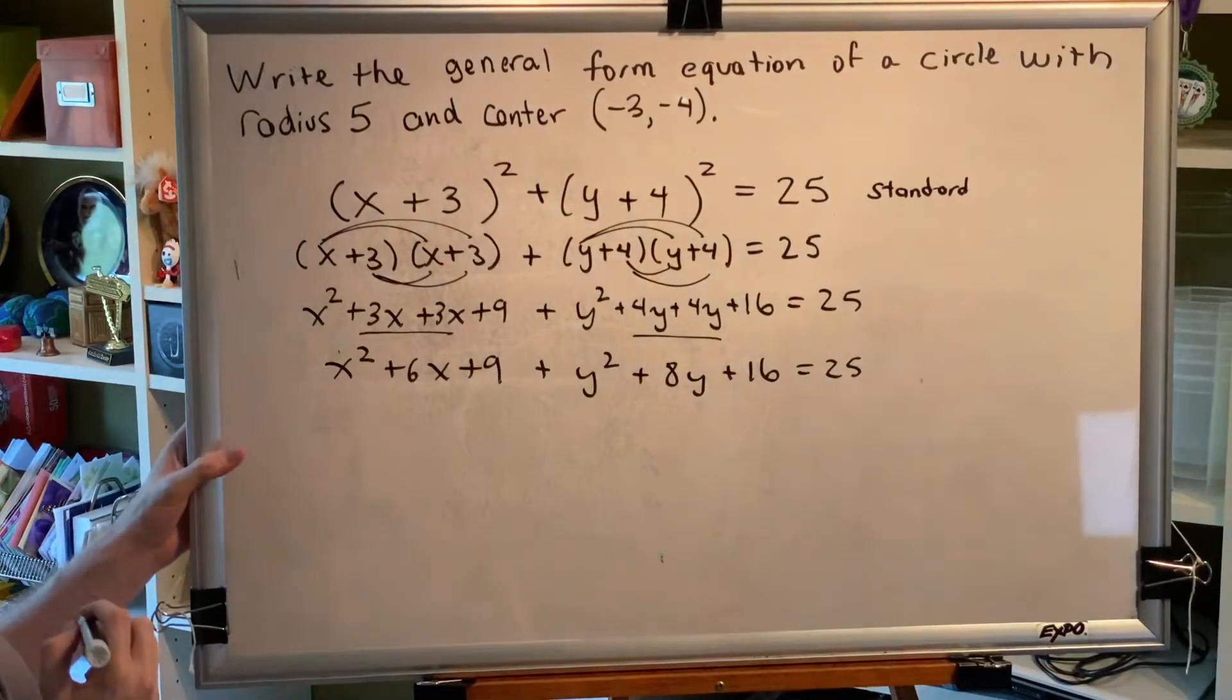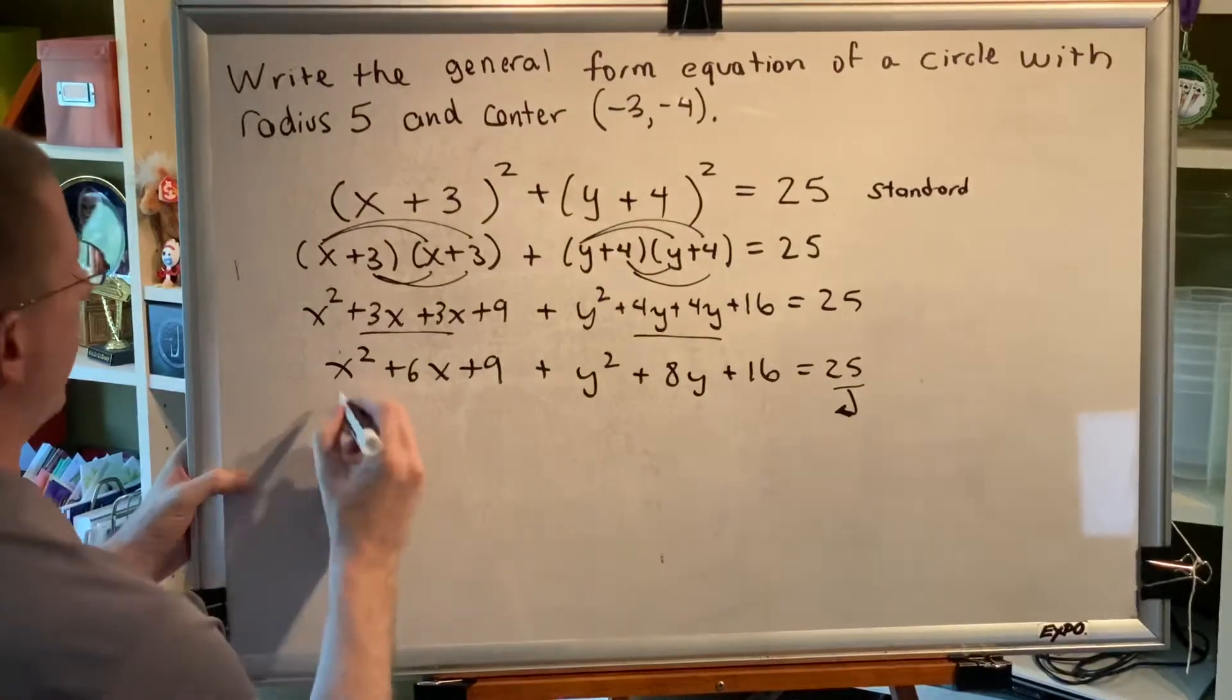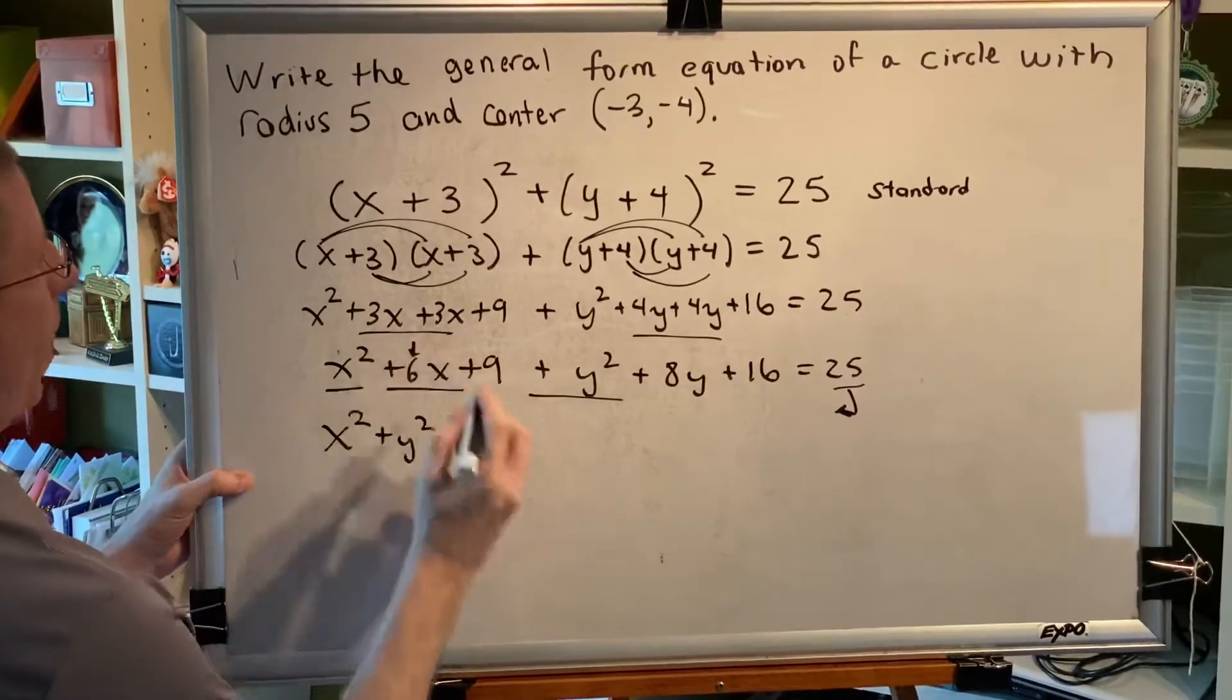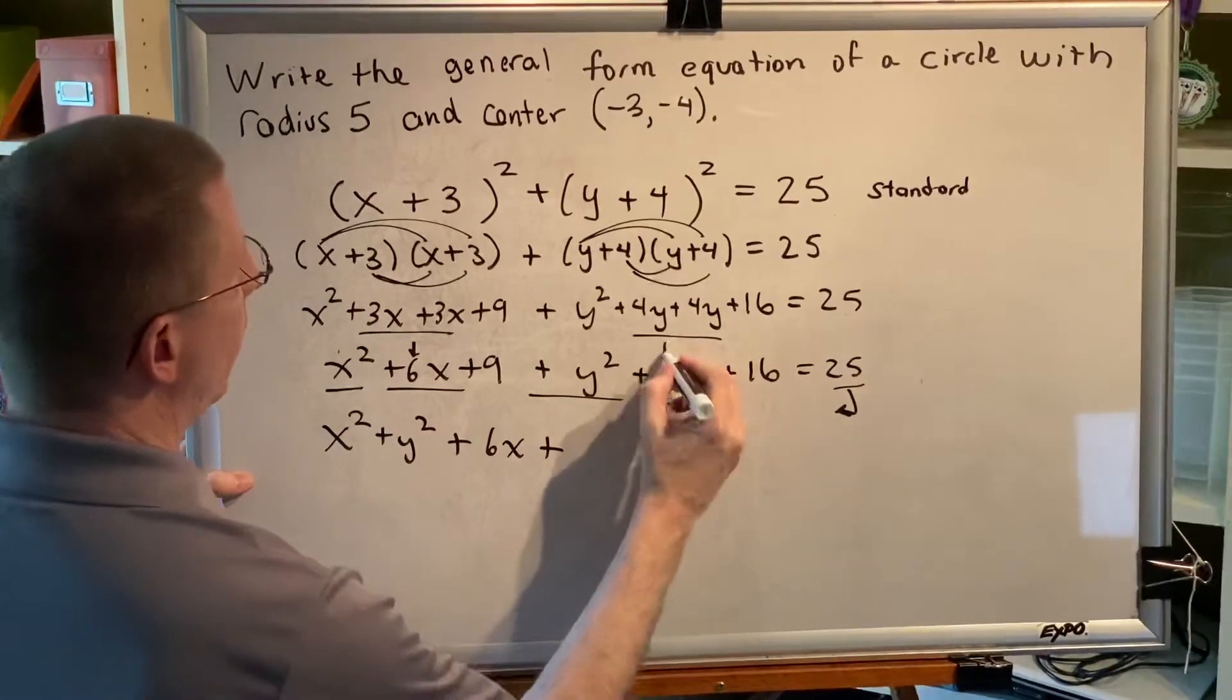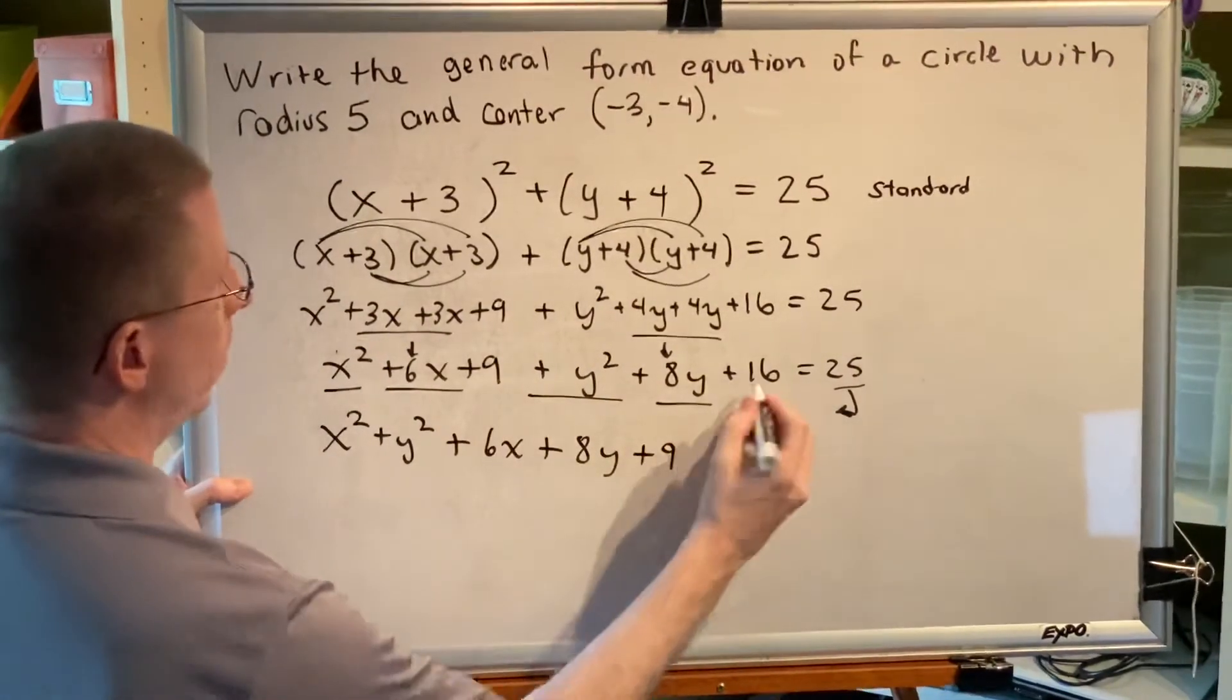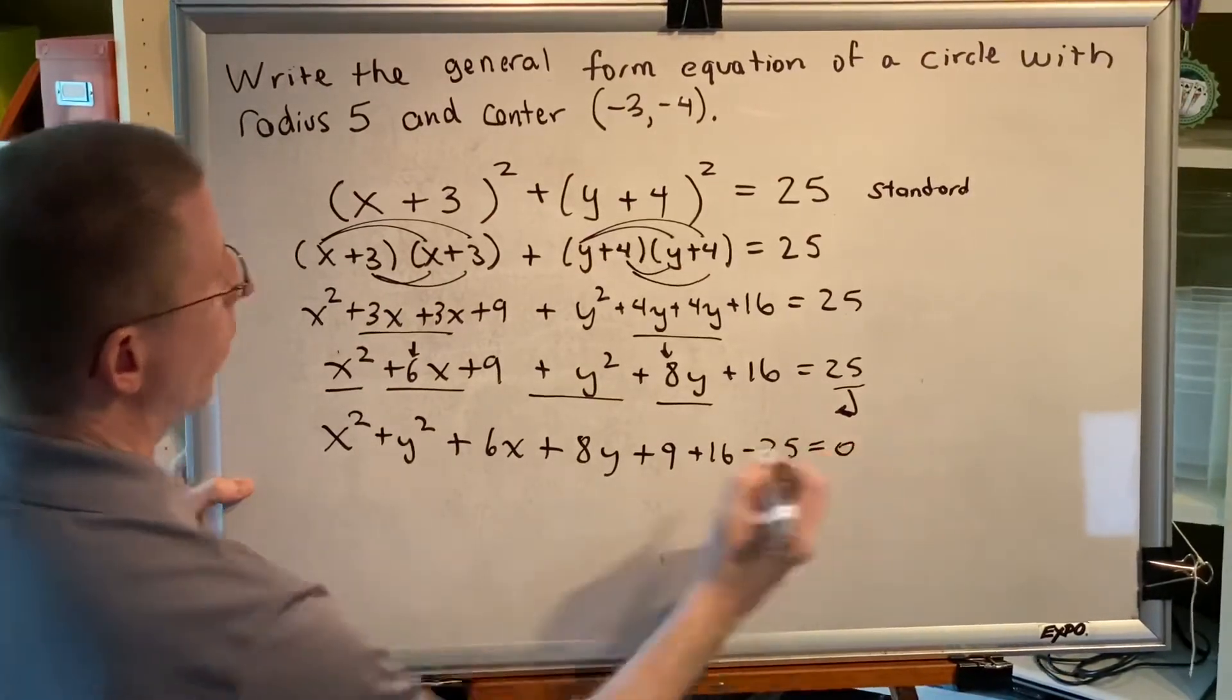Now we're ready to put our terms in the correct order, as well as to take this 25 and move it to the other side. General form says that I need the x² plus y² first, then the ax (in this problem a is 6), then the by (in this problem b is 8), then my constant term c. Well, I've got a plus 9, a plus 16, and when I move the 25 to the other side it becomes a minus 25, equals 0.